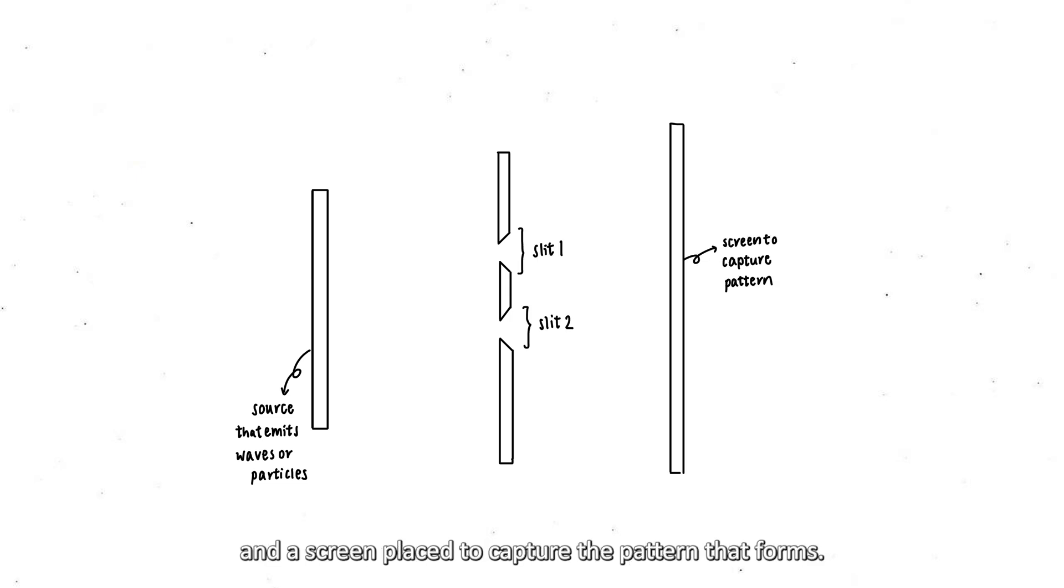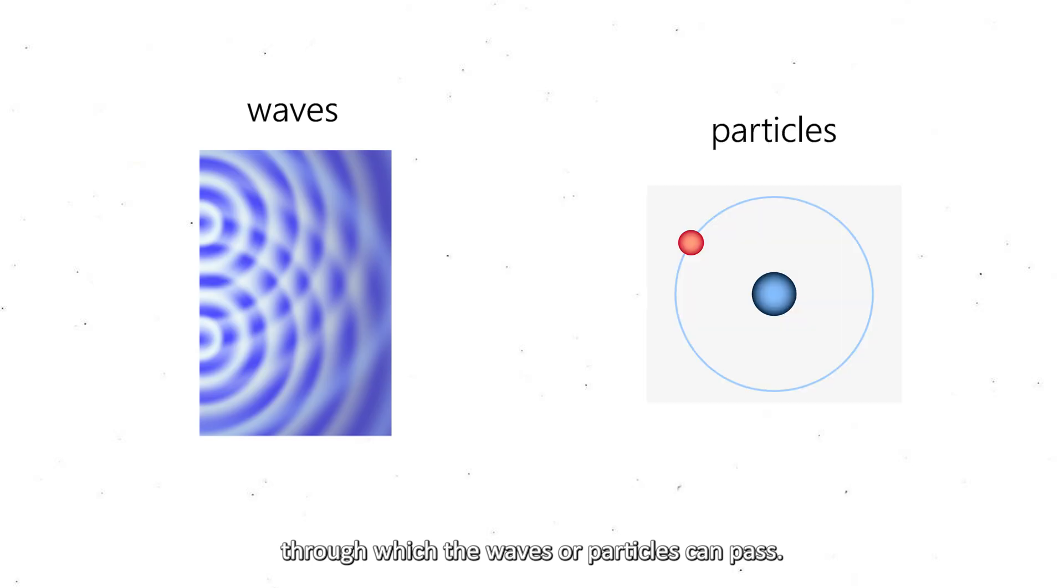The experimental setup typically includes a source that emits either waves or particles, a barrier with two narrow slits, and a screen placed to capture the pattern that forms. The barrier with two slits is placed between the source and the screen. The slits are very close together and act as openings through which the waves or particles can pass.